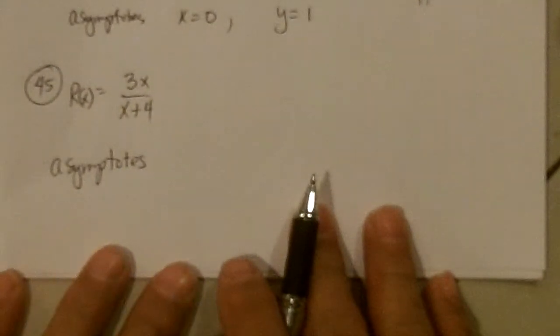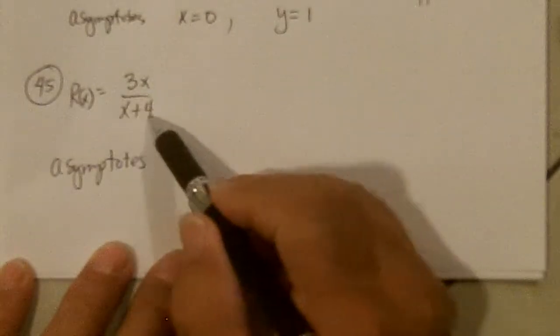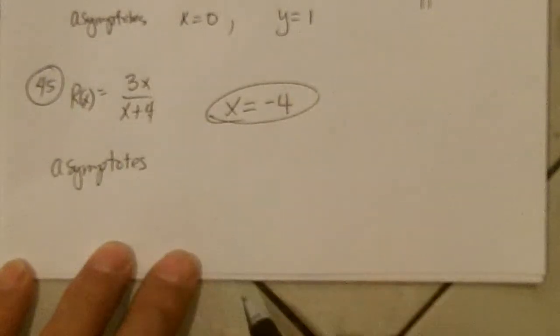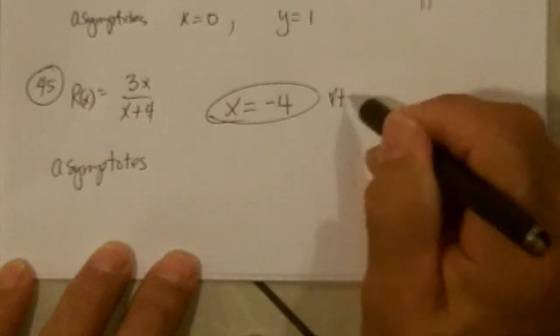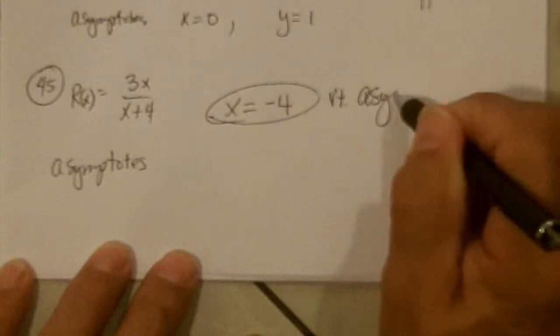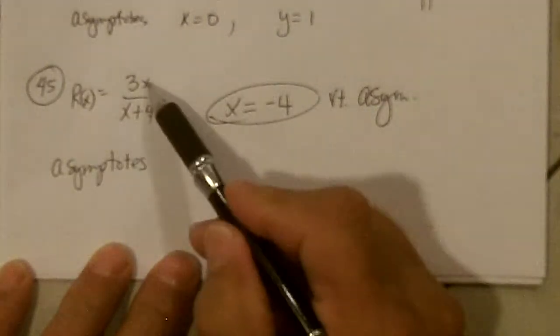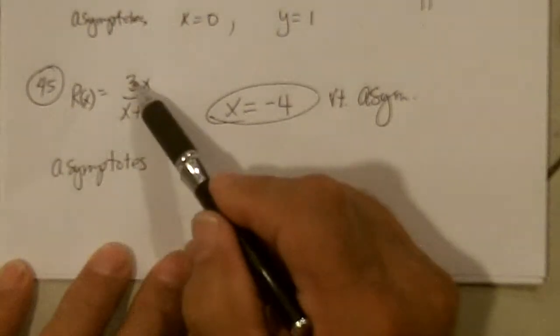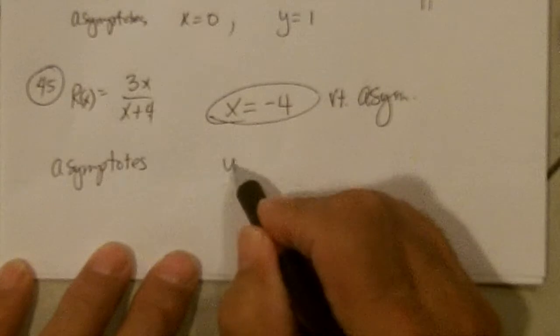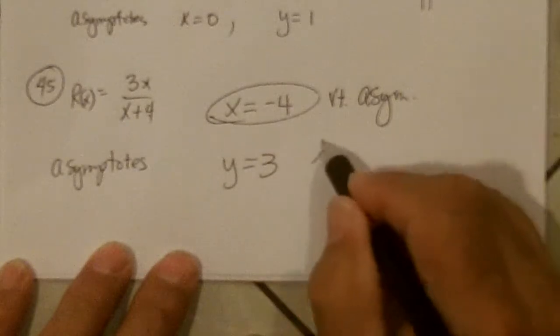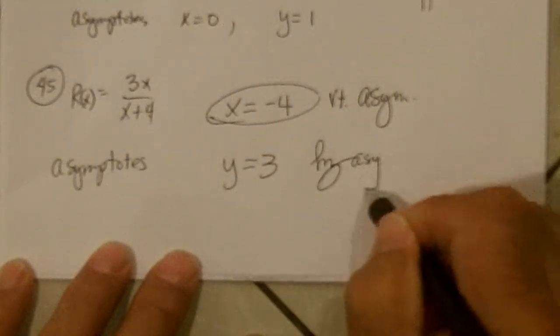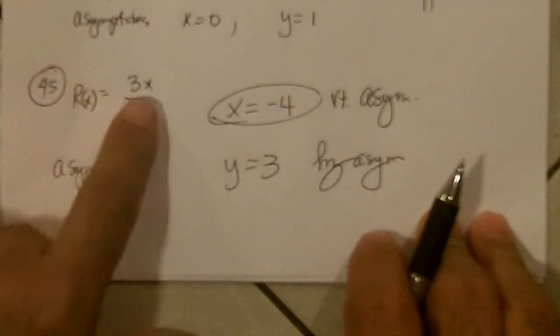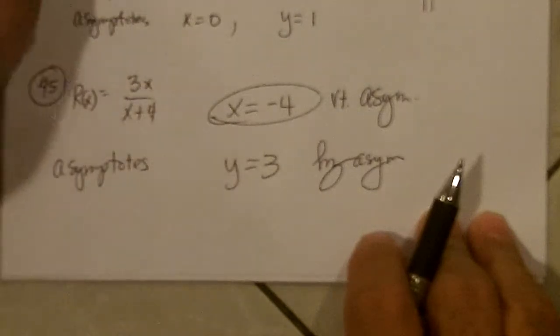45, we're supposed to get the asymptotes. Well, the vertical asymptote will be at x equals negative 4, because that's what makes the denominator 0. That's the vertical asymptote. And the horizontal, since that becomes a degree war, and these are equal degrees, so it's 3 to 1, so y equals 3 is the horizontal asymptote. So that's 45, x-intercept is 0, y-intercept is 0.